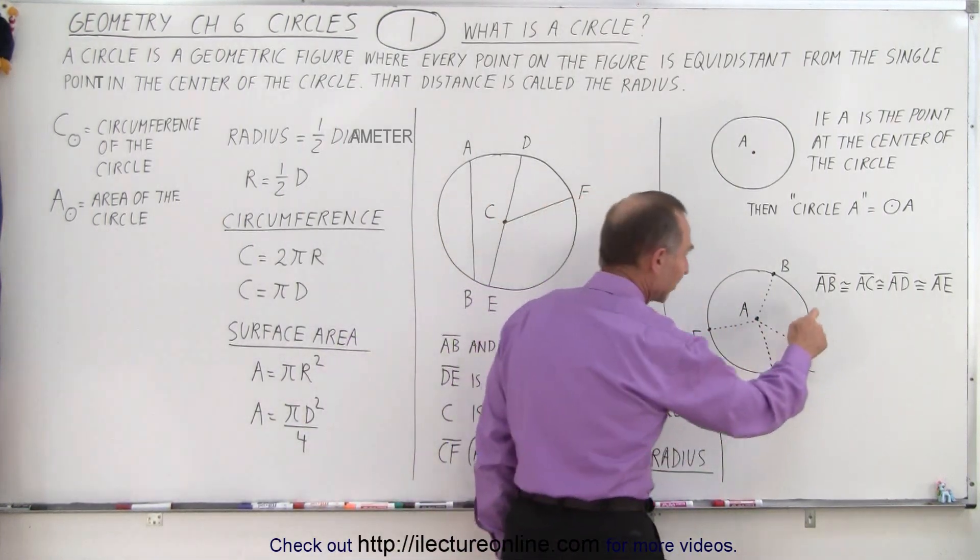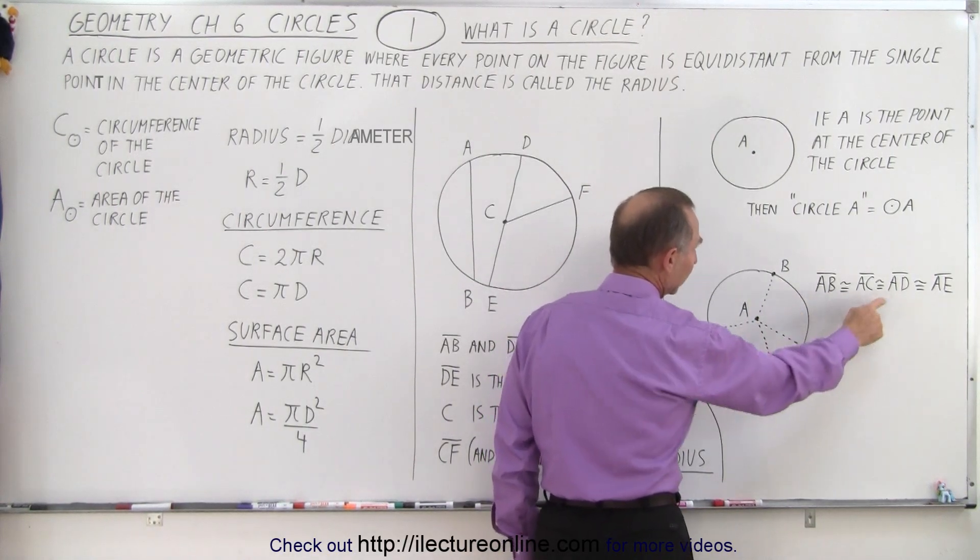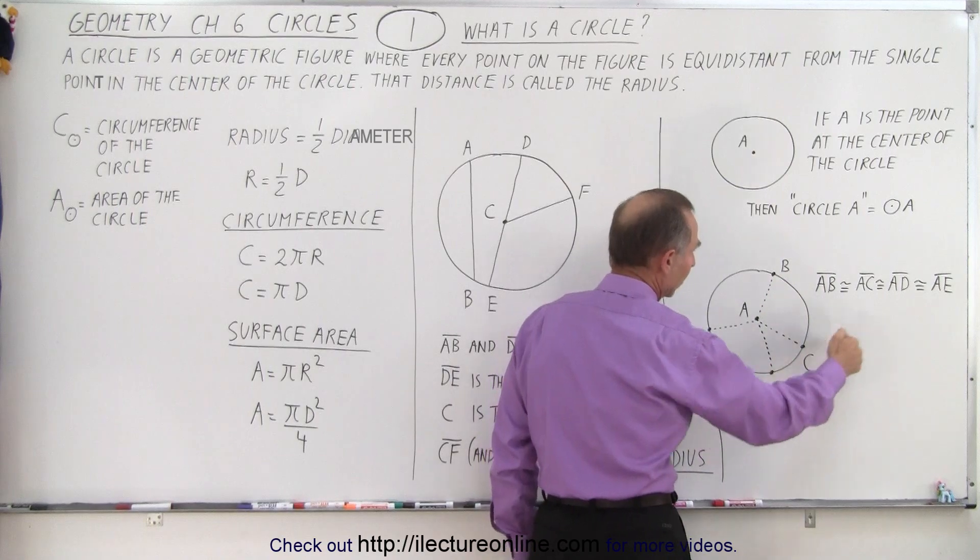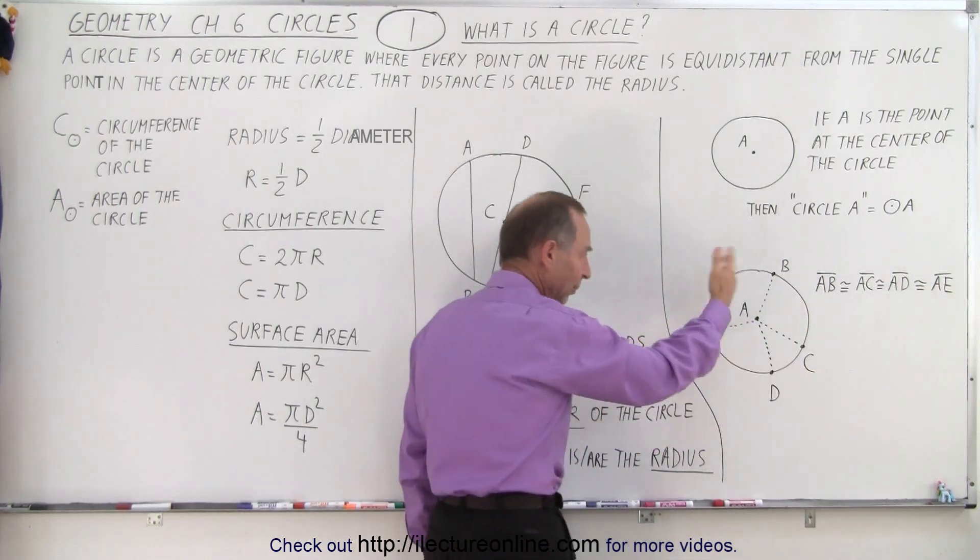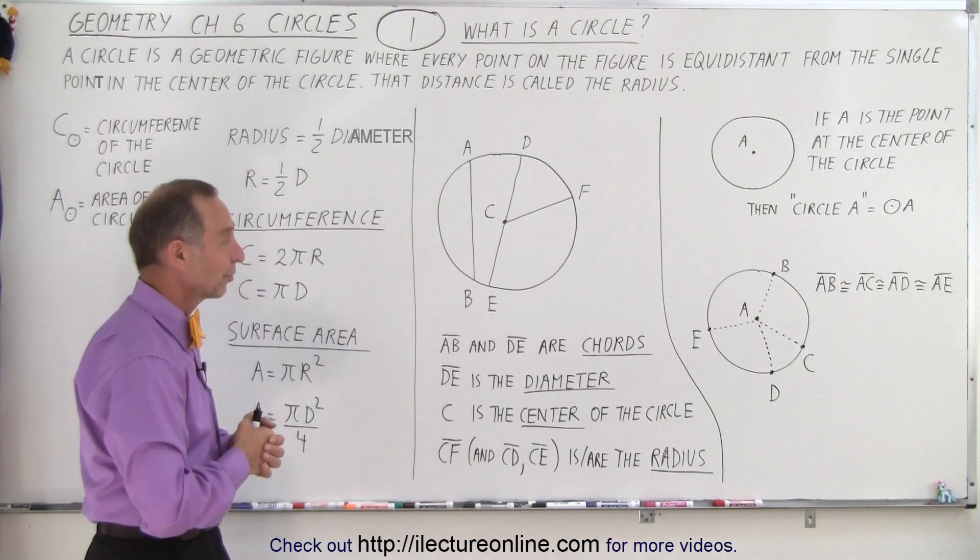So you can say that the line segment from A to B is congruent to the line segment from A to C, is congruent to the line segment from A to D, is congruent to the line segment from A to E, and it would be that way for every point on the circle, and that by definition is a circle.